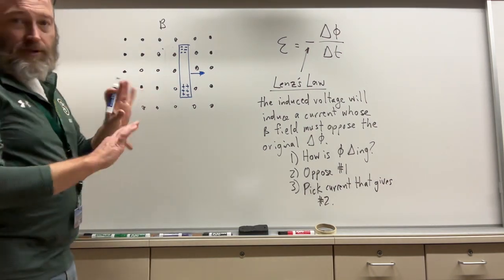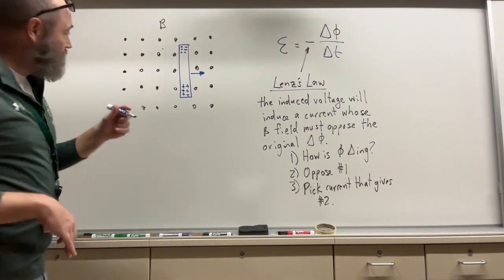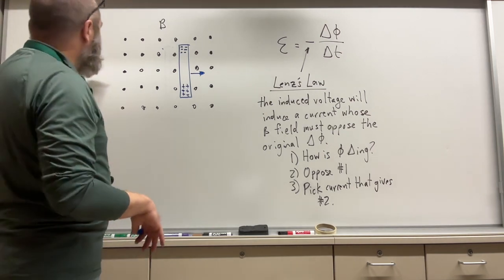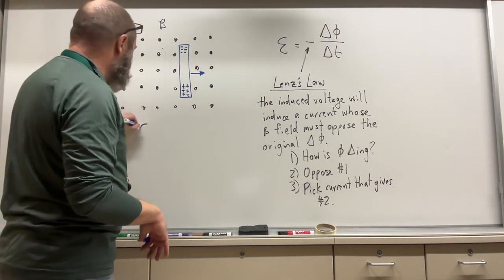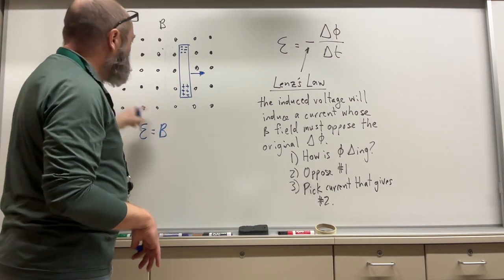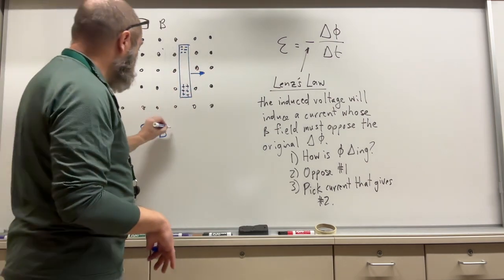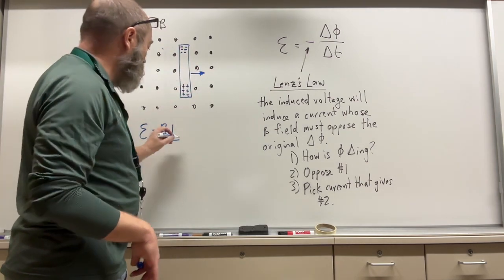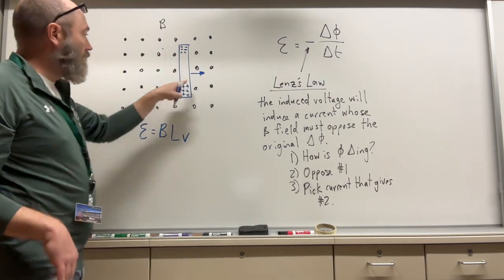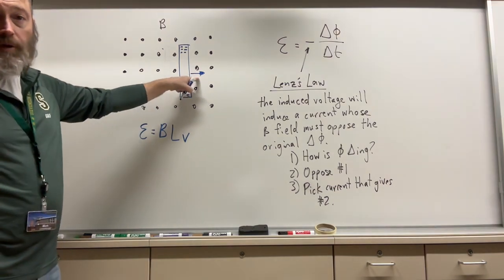The voltage that I have induced is equal to V = BLV, where B is the magnetic field strength, L is the length of that bar, and V is the speed that it's going.